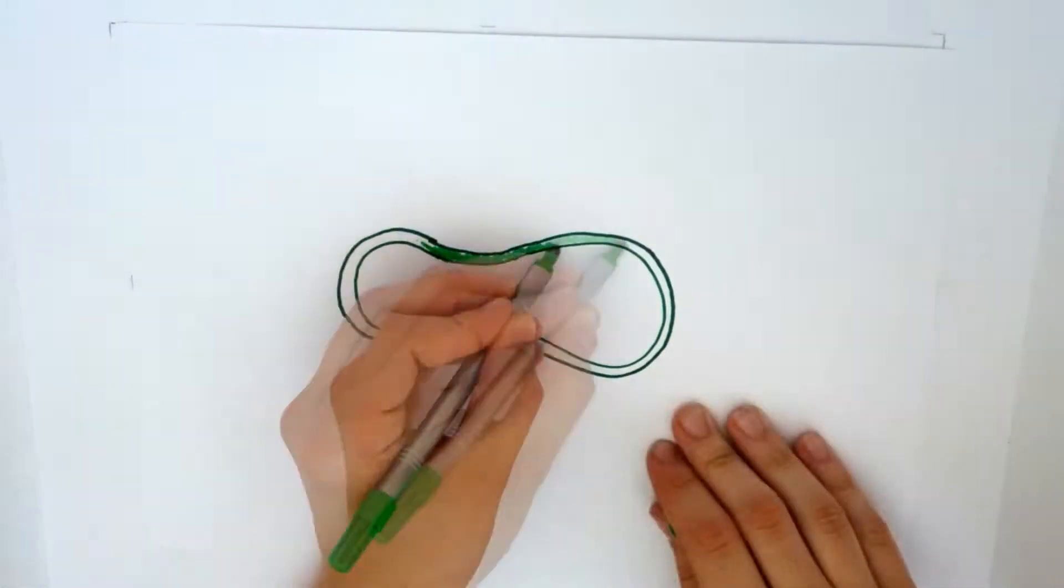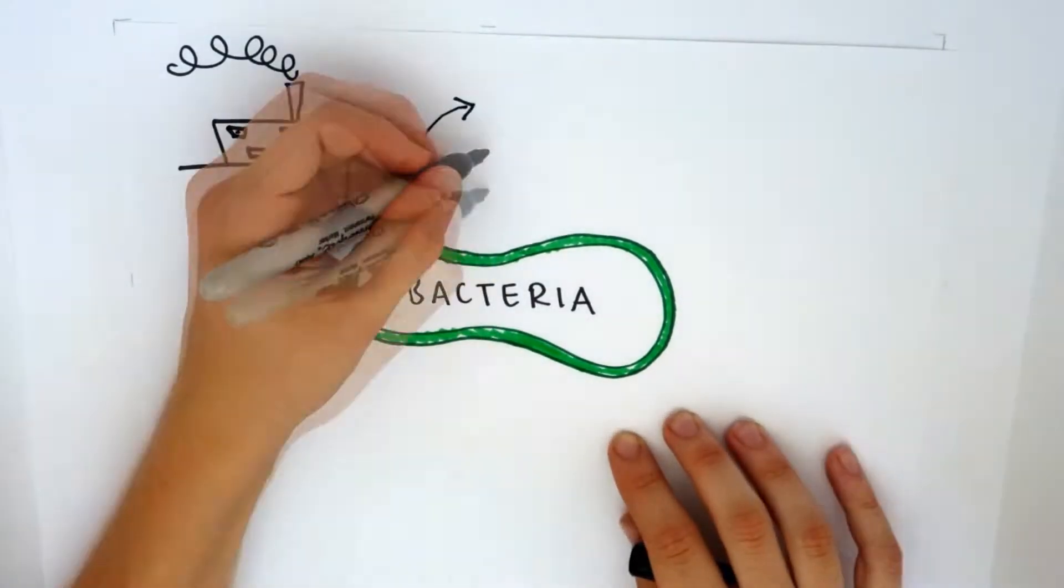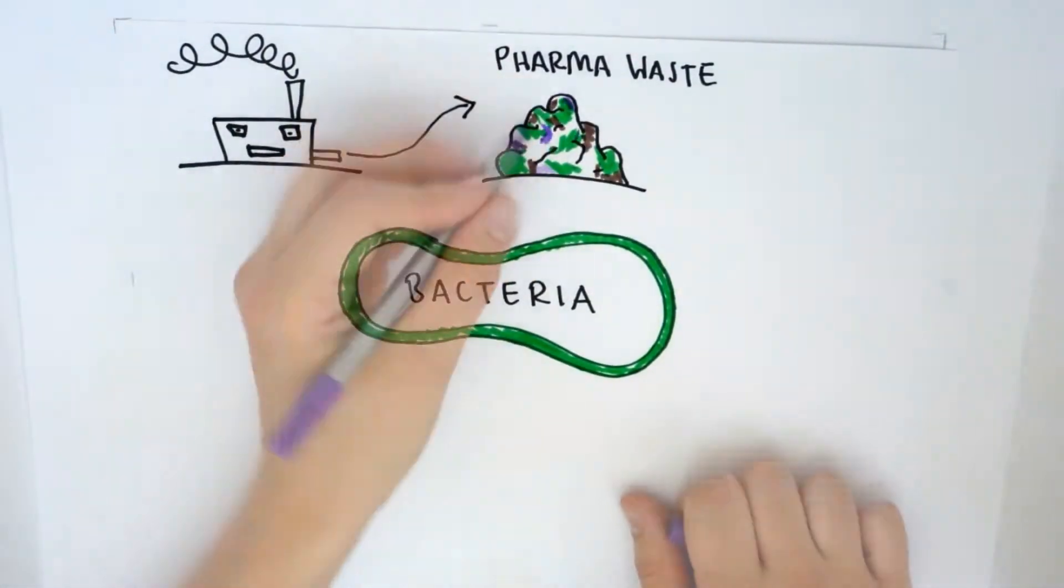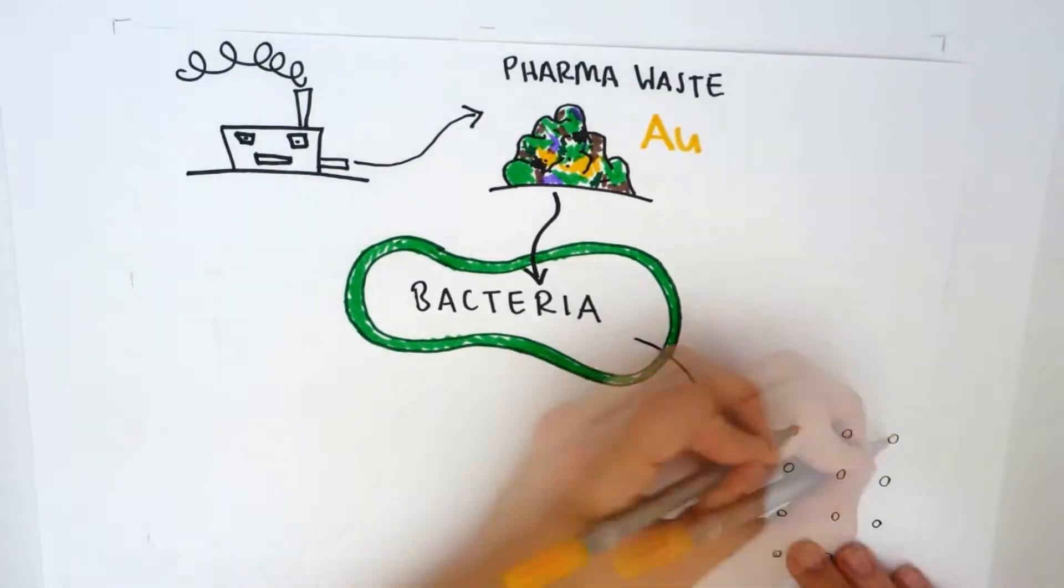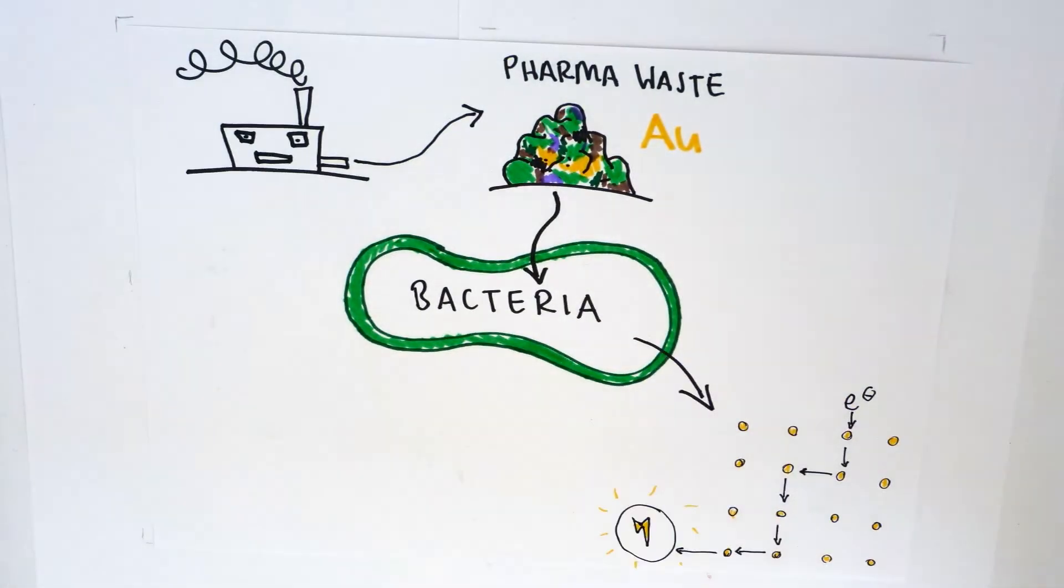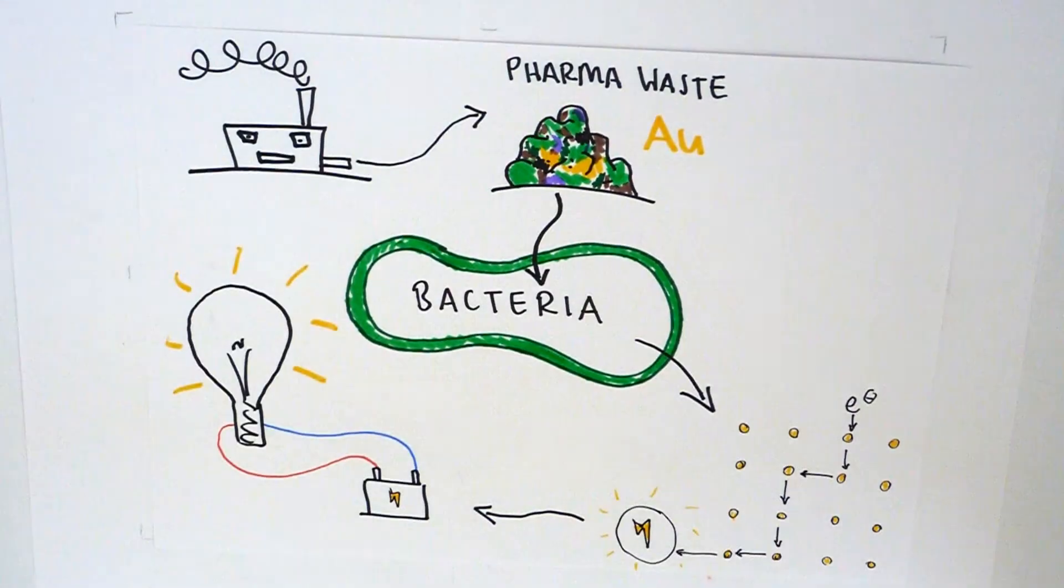We aim to synthesize a strain of bacteria with the ability to take gold ions found in pharmaceutical waste and convert them into a form which conducts electricity very effectively. This will improve the efficiency of the fuel cells.